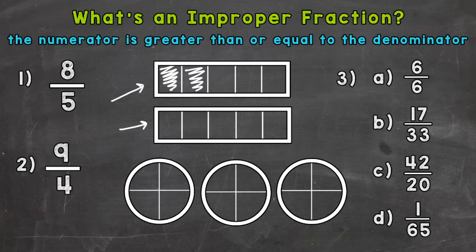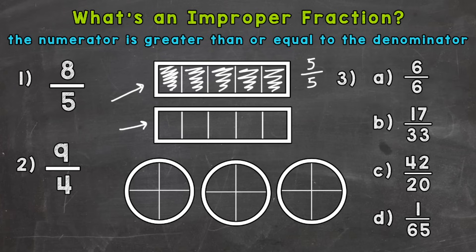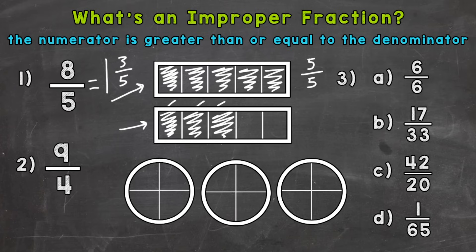And we have 2, 3, 4, and 5. So right now we're at 5 fifths — 5 out of 5 filled in. I want to mention that whenever we have the same number up top as we do on the bottom, we have an improper fraction, and that fraction equals 1 whole. So whenever you have the same number on the top and bottom, it equals 1 whole. But we need to continue here for number 1 because we need to get to 8. So this would be 6, 7, and 8 fifths.